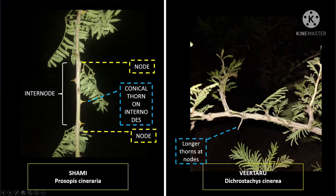Veertharu, Dichrostachys cinerea, has longer thorns and they are located at nodes, not at internodes like shami. If you look closely at a veertharu thorn, it sometimes looks like a branch itself in texture, and sometimes the thorns even have leaves on them. I will show a video of a veertharu and also a large shami tree which I found near my place in Gurugram, further at the end of the video.